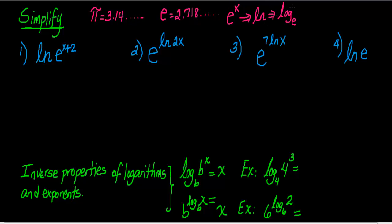All the properties you have learned for log apply to natural log. Here are two properties to go over. When we have log base B of B to the X, that equals X. This is called the inverse property of logarithms. As long as the base of the log is equal to the argument base, the whole expression simplifies to X. For example, log base B of B to the third power equals 3. It will always equal the exponent.